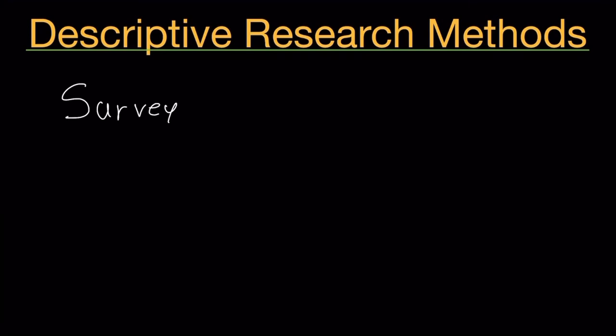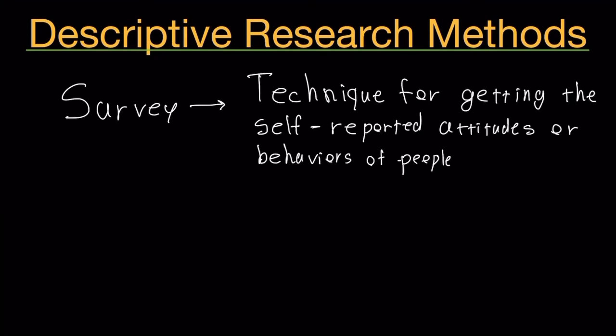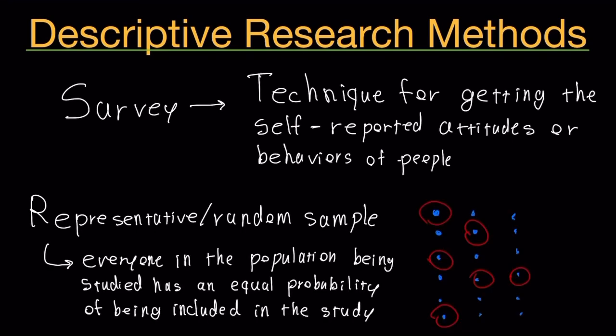Let's talk about surveying, another research method. Surveying is a technique used for getting the self-reported attitudes or behaviors of people. When you do a survey, you have to make sure that the people you are surveying comes from a representative or random sample. What that means is that everyone in the population being studied has an equal probability of being included.